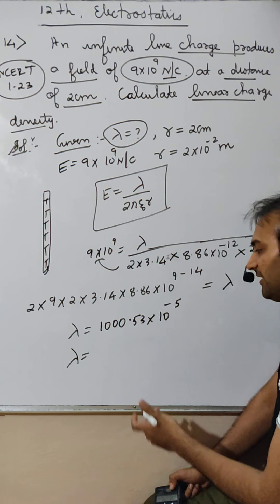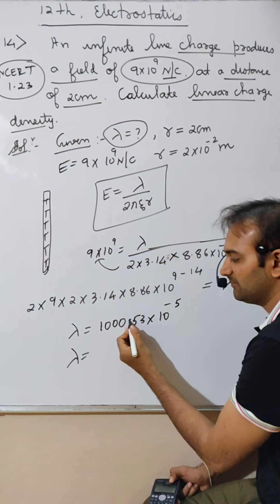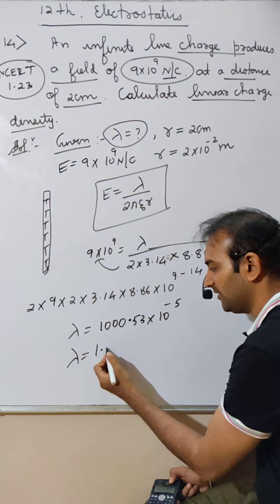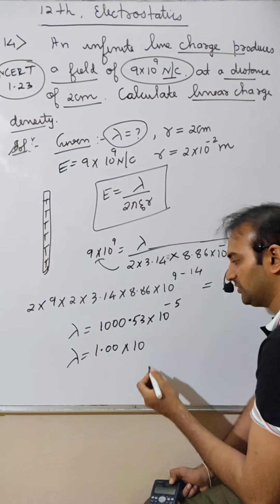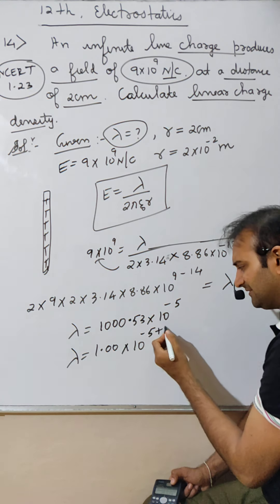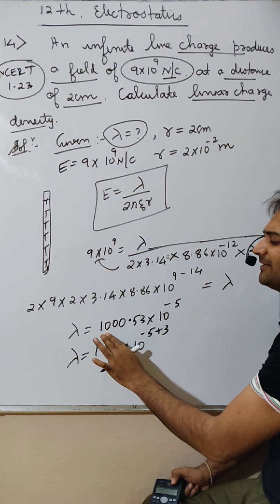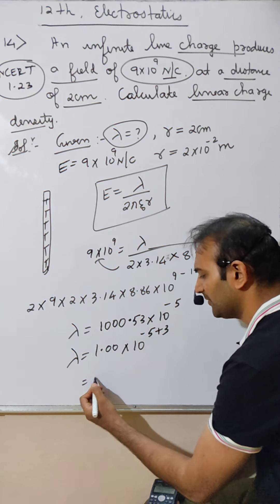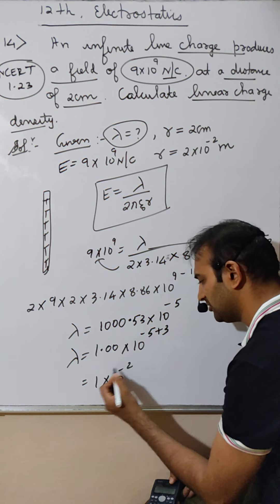This is wrong. 4 decimals. In first decimal: 1.00 into 10 raised to, 3 decimal kam kar, minus